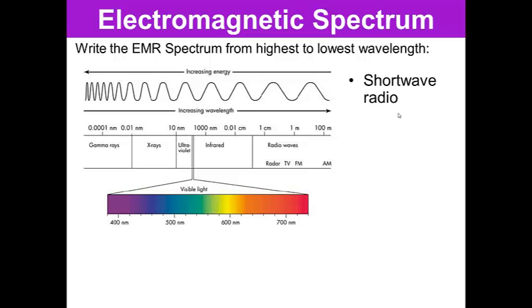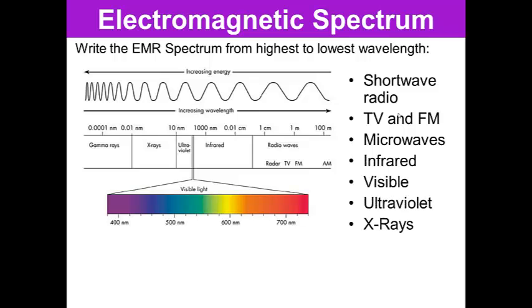So write the EMR spectrum from highest to lowest wavelength. Short wave radio is the highest wavelength, then TV FM, microwaves, infrared, visible, ultraviolet, X-rays, gamma rays. So as you go from one side to the other, you have the highest to the lowest wavelength. So these are the longest and these are the shortest.